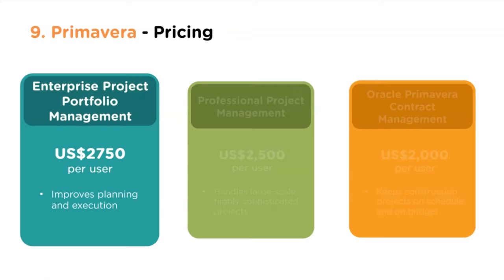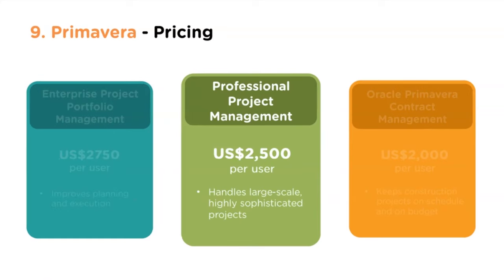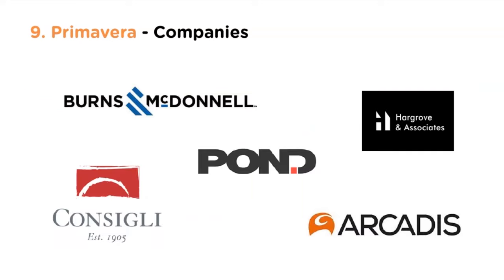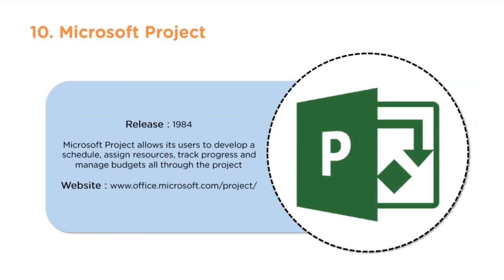Oracle Primavera pricing: the Enterprise Project Portfolio Management version costs $2,750 per user and improves planning and execution. The Professional Project Management version is $2,500 per user and handles large-scale, highly sophisticated projects. The Contract Management module costs $2,000 per user and keeps construction projects on schedule and on budget. Companies using Primavera include Burns & McDonnell, Pond, and Arcadis.